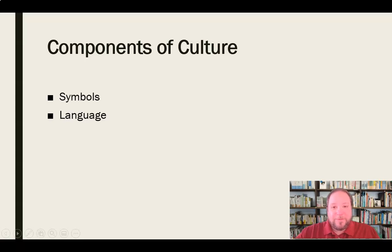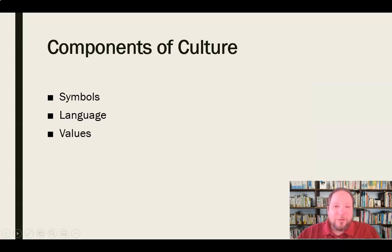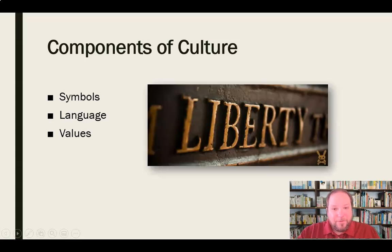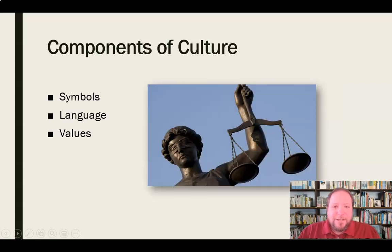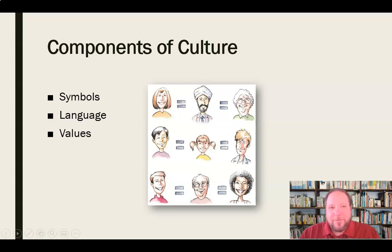As far as language, a number of languages are spoken here in the United States and we don't have an official language, although for the most part everybody in the United States speaks English — that's the commonly accepted language. Our values in the United States include things like liberty — the freedom to live as we wish. Justice — we value this justice system. And equality — we do value equality, though we have had complicated history with issues around slavery, racial division, and the suppression of women. We're a work in progress, still evolving as a nation.